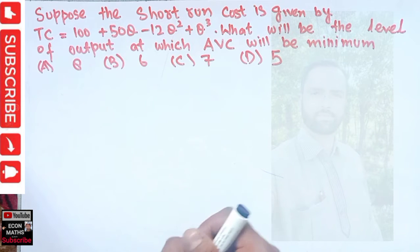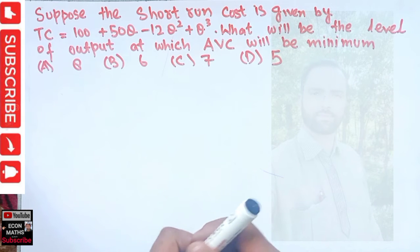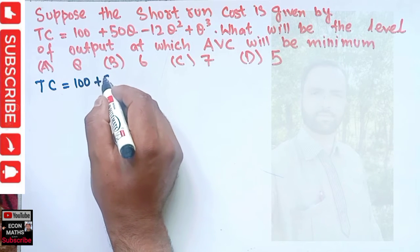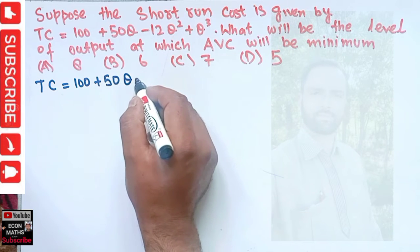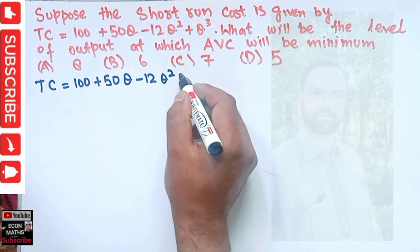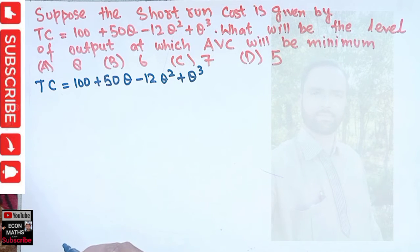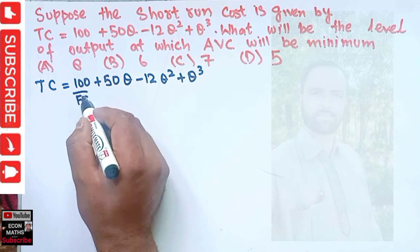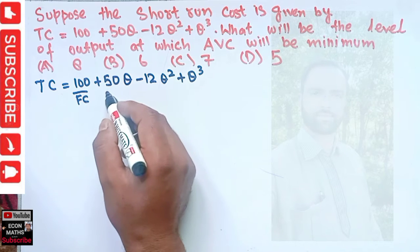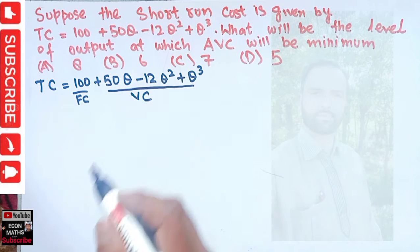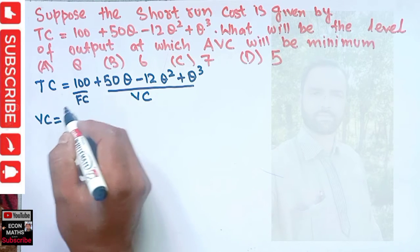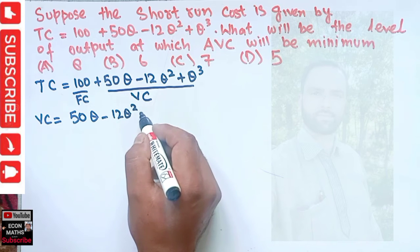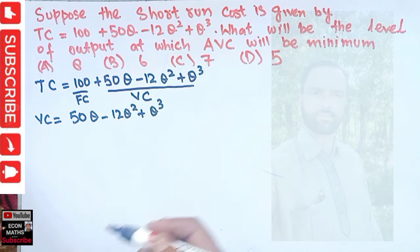We will see at what output level the average variable cost would be minimum. First, we write our total cost function: TC = 100 + 50q − 12q² + q³. Now, what is the fixed cost and what is the variable cost? The 100 is the fixed cost — it does not depend upon the level of output. The last three terms are the variable cost: VC = 50q − 12q² + q³.